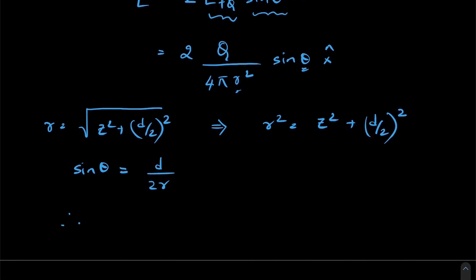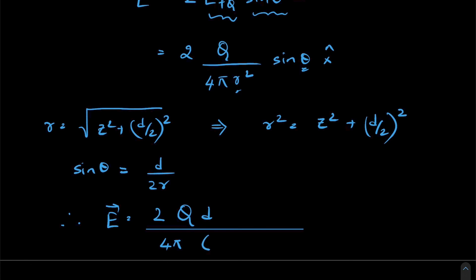Therefore, our final electric field is going to be 2qd divided by 4π times (z squared plus (d/2) squared) to the power of 3/2, in the x-cap direction. So this is our solution. Please subscribe to this channel for more such videos.